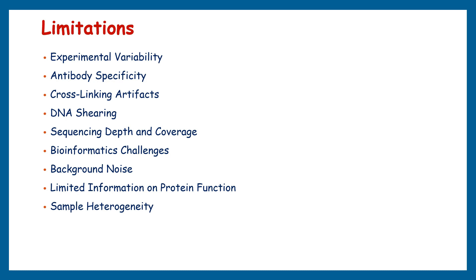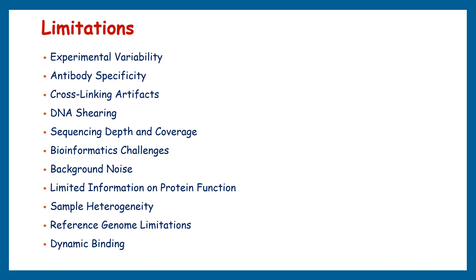ChIP sequencing can identify binding sites, but it doesn't directly provide information about the functional consequences of those interactions. ChIP sequencing data might represent an average signal across a heterogeneous population of cells, potentially masking cell-to-cell variability in protein-DNA interactions. Additionally, ChIP sequencing heavily relies on a reference genome for mapping and analysis, and it might miss binding events occurring in repetitive regions or areas not well covered by the reference genome. It also provides only a snapshot of protein-DNA interactions at a specific moment, and may not capture transient or context-dependent interactions.